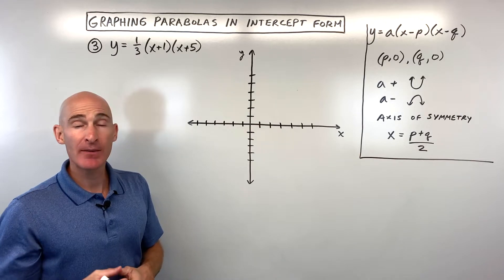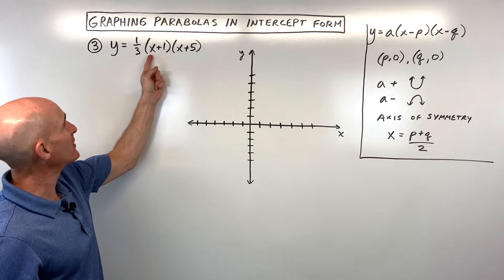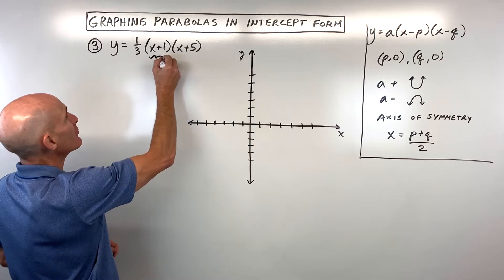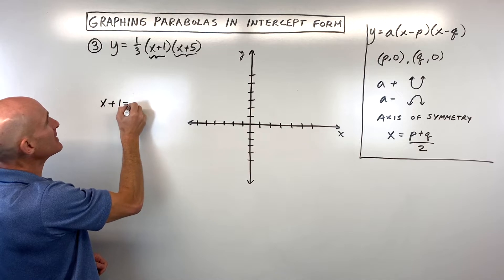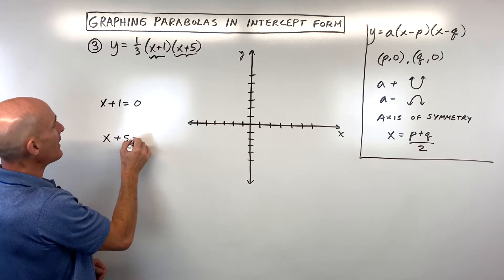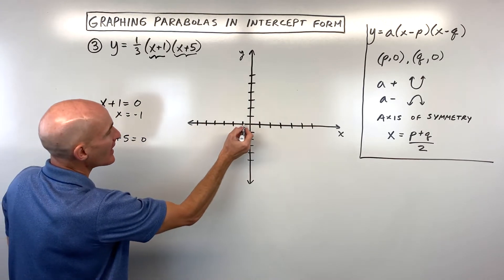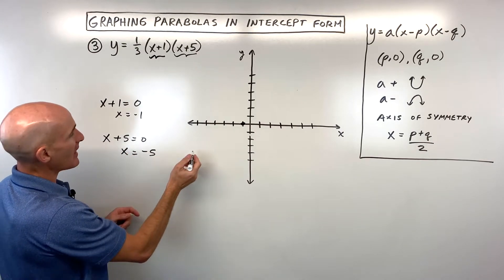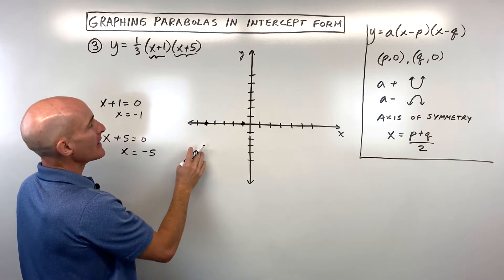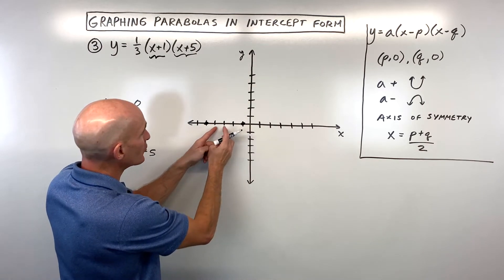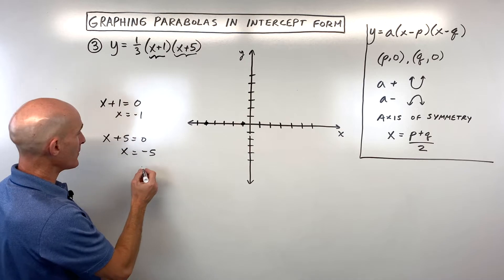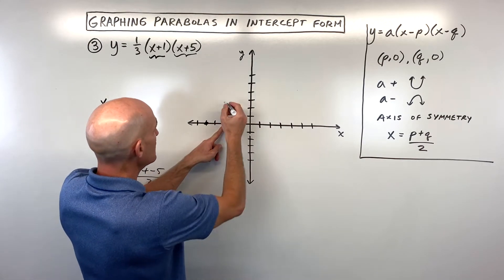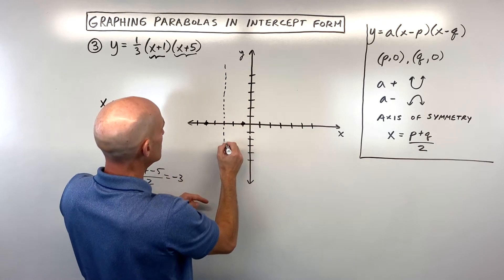For the last example: y equals one-third times the quantity x plus one times the quantity x plus five. Setting each factor equal to zero: x plus one equals zero gives x equals negative one, and x plus five equals zero gives x equals negative five. Those are our two x-intercepts. To find the axis of symmetry, average them: negative one plus negative five divided by two is negative six over two, which is negative three.